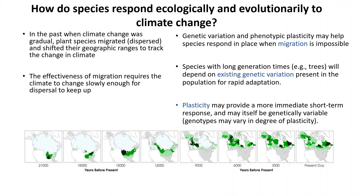So how does a species respond to climate change? Climate change is nothing new and species have been able to keep pace with changes in climate in the past. The illustration at the bottom shows the gradual change in distribution of species over time from 21,000 years ago to present day. However, the rapid rate of climate change in recent decades hinders species from keeping pace. This results in migration lag, which is a huge hurdle for species with long generation times like trees. As such, trees would need to rely on existing genetic variation and phenotypic plasticity to respond to climate change in place. Such plasticity may provide a more immediate short-term response.